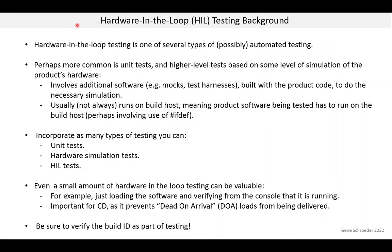Hardware-in-the-loop testing is just one of several types of automated testing. Perhaps the more common type is unit testing and higher-level tests based on some simulation of the product's hardware. These tests involve writing additional software known as mocks or test harnesses that is built with the product code to simulate hardware. Usually this kind of testing runs on the build host, meaning the product software has to build and run on the build host, and you'll often see preprocessor if-defs to handle this special build.